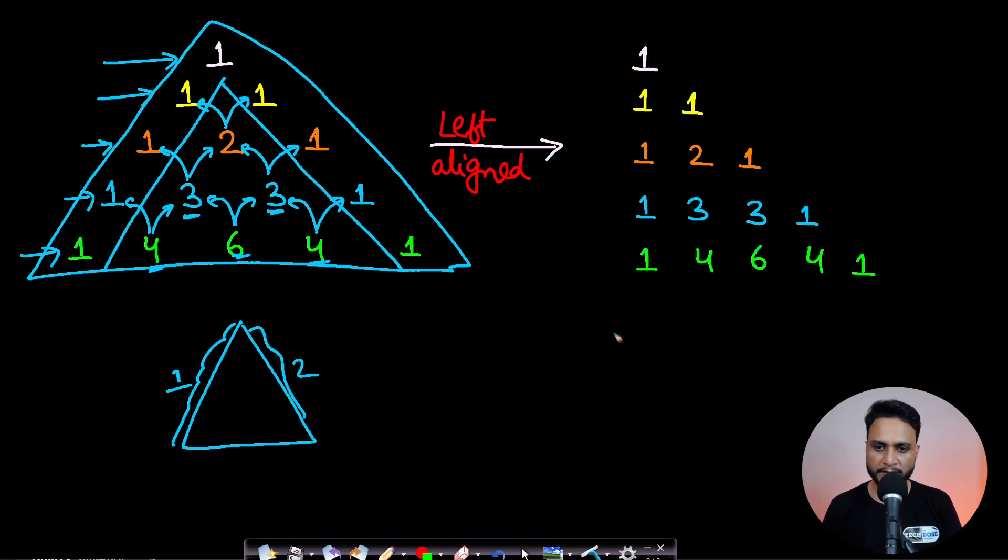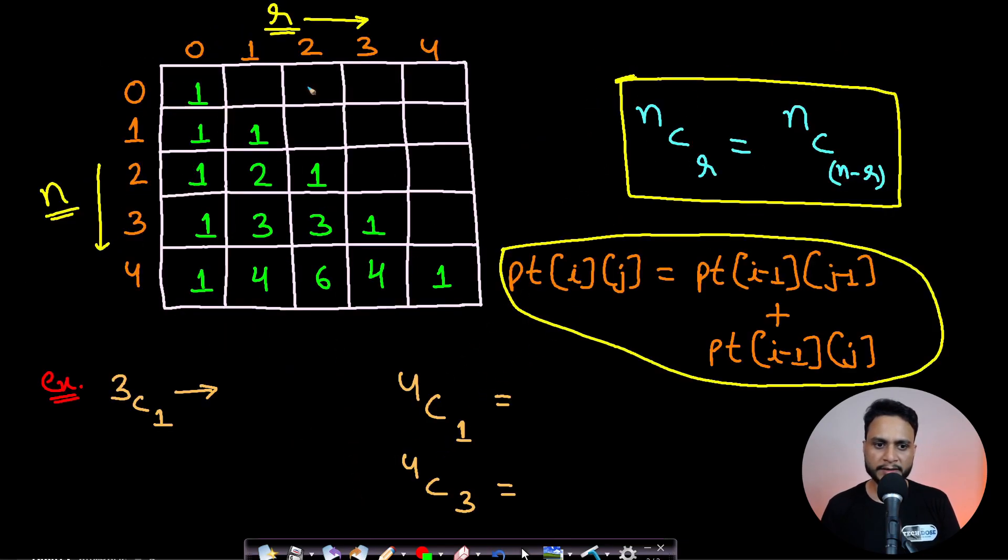You can number these rows from zero and go till n, and also number the columns. If you do that, this will look in the form of a matrix where n represents the rows and r represents the columns.